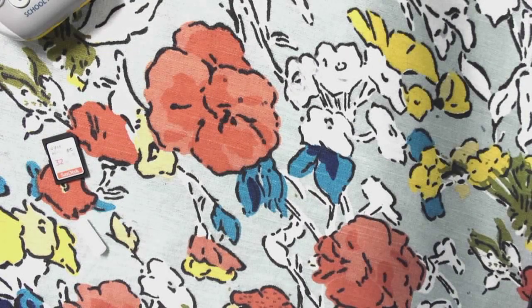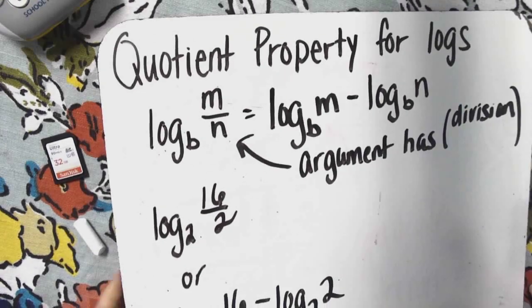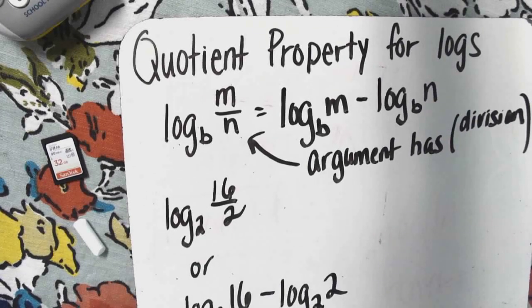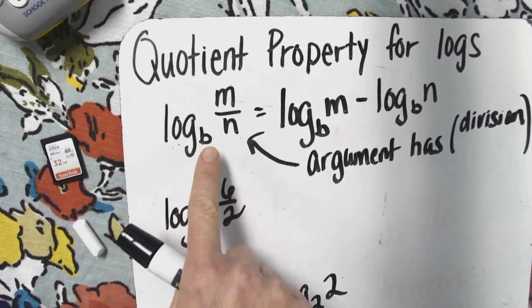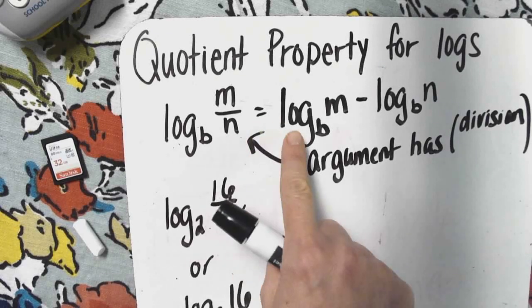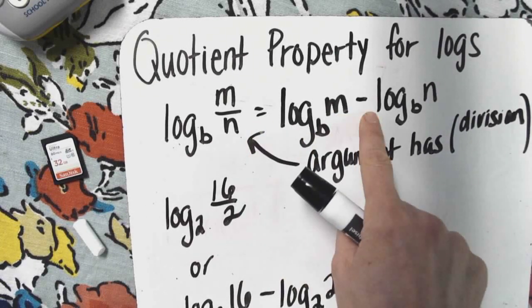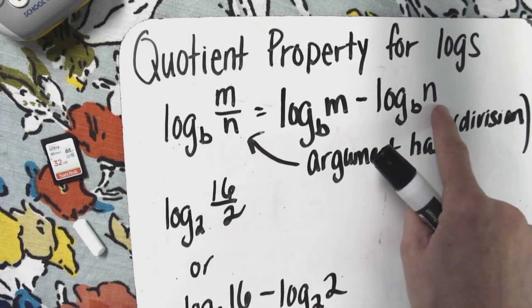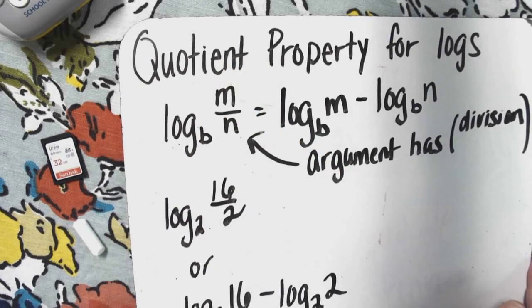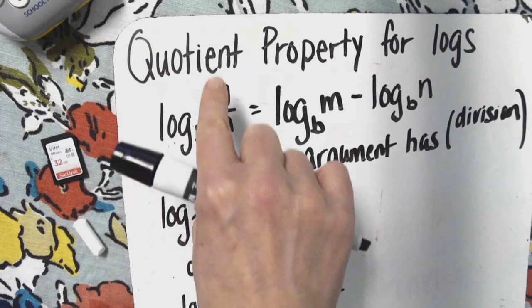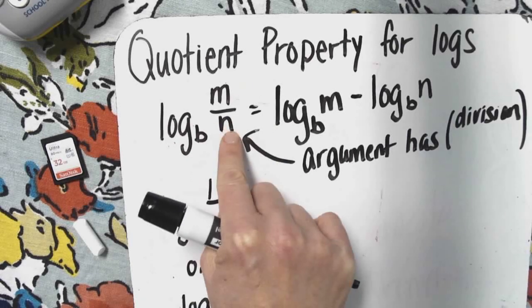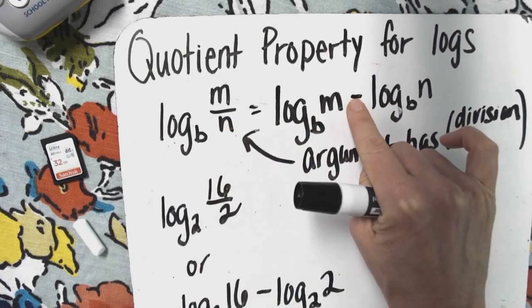Next one is quotient property for logs. This property says, log base B of m divided by n is the same as the log base B of m minus the log base B of n. So if you have an argument that has division in it, which normally is seen with a fraction, it becomes subtraction. So you have a single log with an argument with a fraction, you can write as two separate fractions with a minus sign.